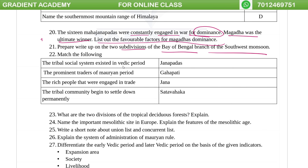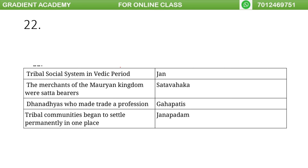The tribal socialism existed in the Vedic period. The prominent leaders of the Mauryan period — the rich people were engaged as traders. The tribal community began to settle down permanently. That is the tribal social system in the Vedic period.